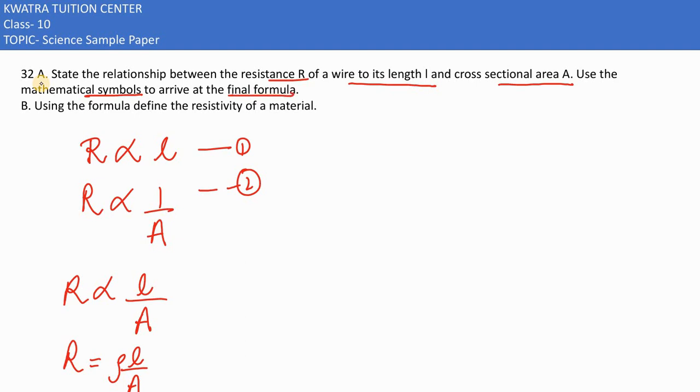Next, part B asks us to define the resistivity of a material using the formula. We rearrange by taking A to the other side and dividing by length. So resistivity rho equals R A over L.